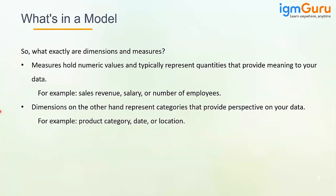A measure is something which holds a numerical value and typically represents quantities that provide meaning to your data — for example, sales revenue, salary, number of employees. Measures are numerical values used for mathematical operations to represent quantity. The opposite of that is a dimension, which represents the category that provides perspective on your data — for example, product category, date, and location.